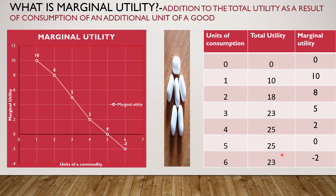After the sixth unit of consumption, the total utility decreases and marginal utility becomes negative. We get negative 2 from 23 minus 25. So as you consume more of a good, marginal utility goes on decreasing. The total utility is still increasing, but at a diminishing or decreasing rate.